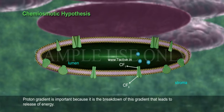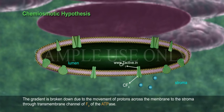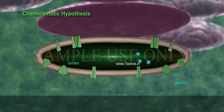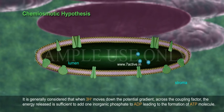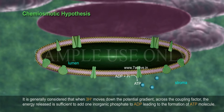The proton gradient is important because it is the breakdown of this gradient that leads to the release of energy. The gradient is broken down due to the movement of protons across the membrane to the stroma through the transmembrane channel of F0 of the ATPase. It is generally considered that when 3H+ moves down the potential gradient across the coupling factor, the energy released is sufficient to add one inorganic phosphate to ADP, leading to the formation of one ATP molecule.